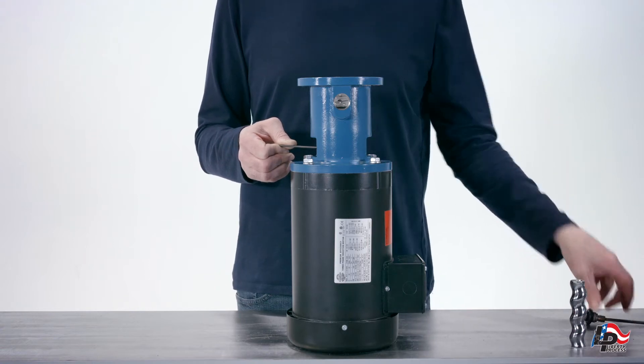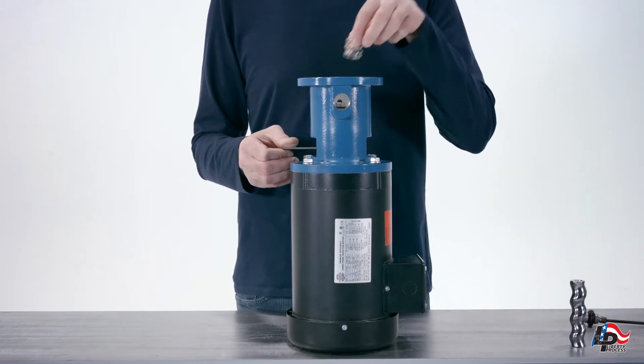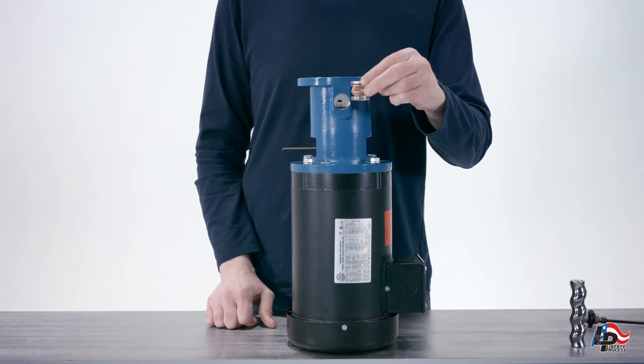Remove the spring and rotating face of the mechanical seal assembly from the stub shaft. The stationary face of the seal assembly will still be installed in the pump discharge casing.